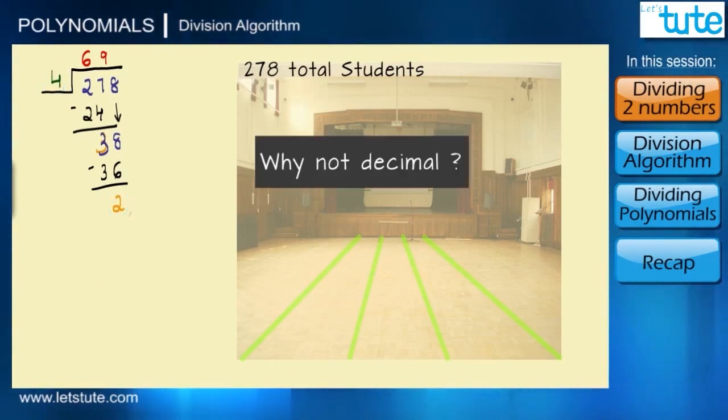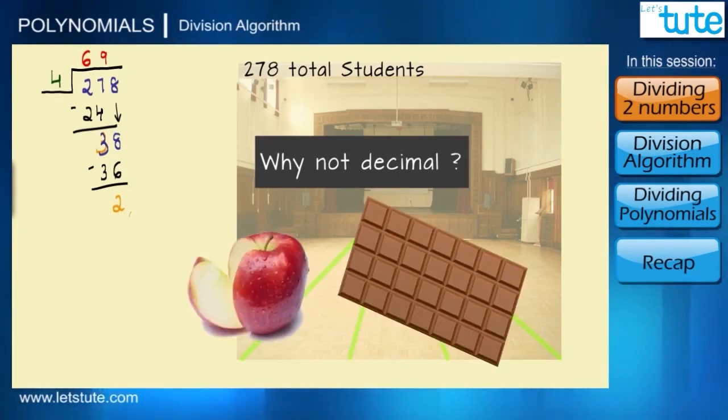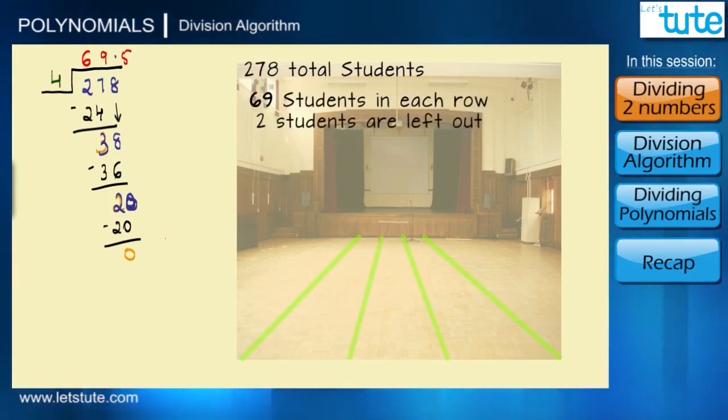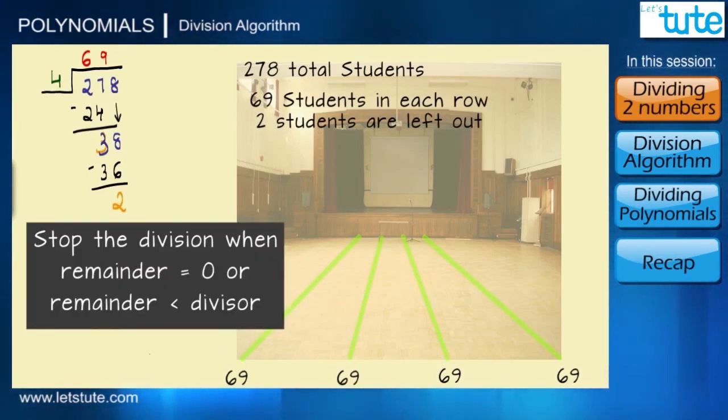Now you might be wondering why aren't we using any decimals. That is because in this case we are dividing number of students. But in case if we were dividing a fruit or a bar of chocolate, in that case we could have further carried on the division. We would have put a point here and taken a 0 down, and then we would have got 4 times 5 is 20 with remainder 0. So 4 will completely divide the dividend by 69.5, but for now we'll just stop till the remainder 2. So ultimately we stop the division when our remainder is 0 or it is lesser than the divisor.